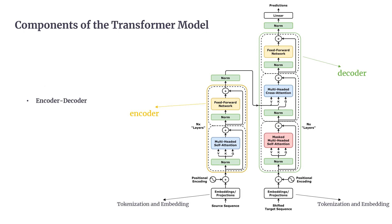Second, transformers are structured around an encoder-decoder framework. The encoder's job is to read and understand the input sequence, turning it into a set of continuous representations. The encoder is made up of several identical layers — the original model had six. Inside each layer you'll find multi-head self-attention, which helps the model figure out how important each token is in relation to others, capturing complex relationships. Each token is then passed through a feed-forward neural network. Residual connections and layer normalization help keep training stable and ensure information flows smoothly through the network.